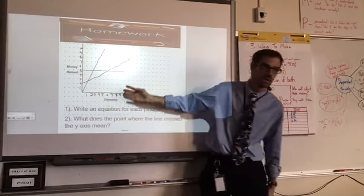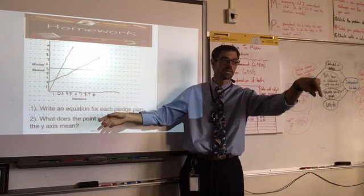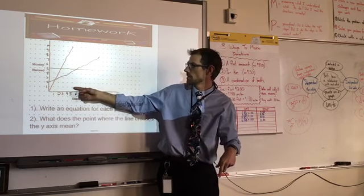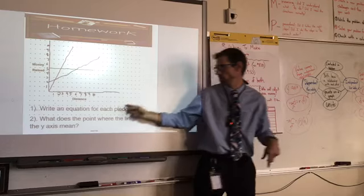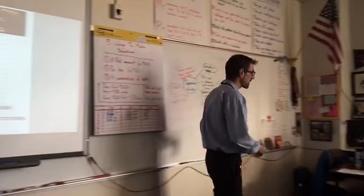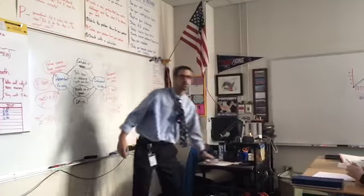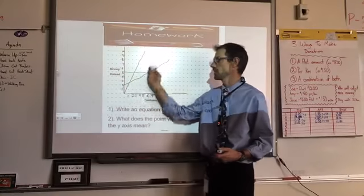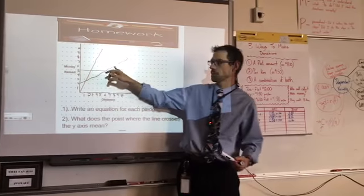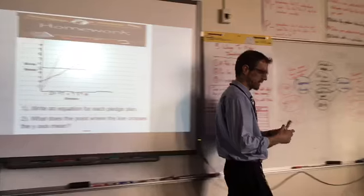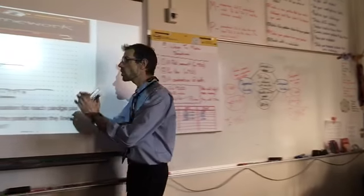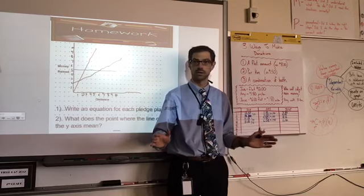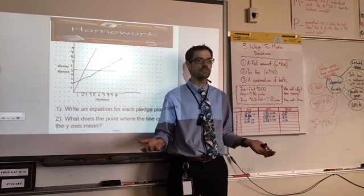Part of your homework was to write an equation for each of the pledge plans. The pledge plans are basically how they are raising their money. There's three people here. We have the green person. Their pledge plan, if they go zero kilometers or they don't even show up for this walk-a-thon, they still get $5.